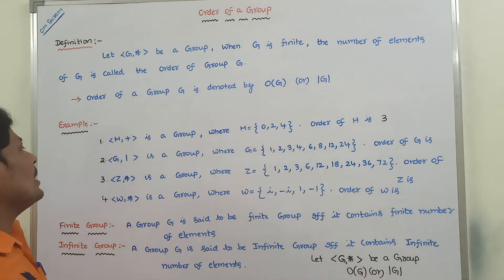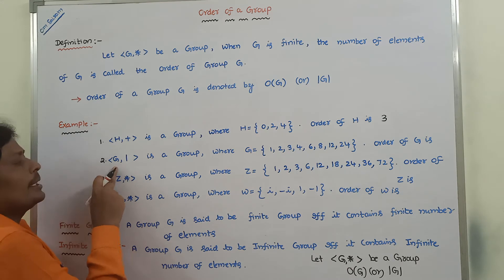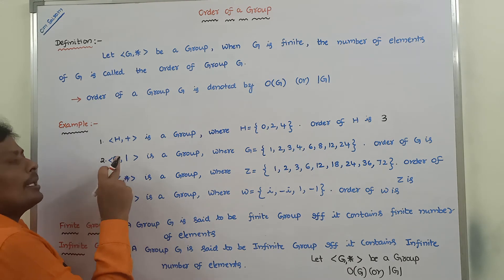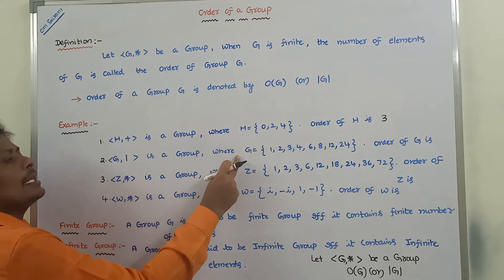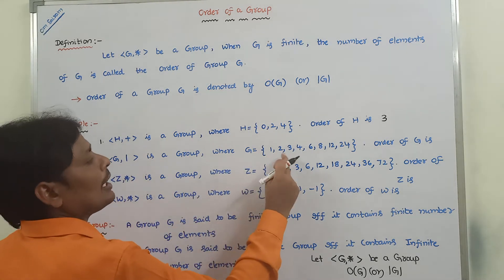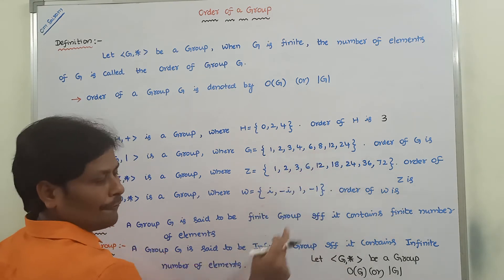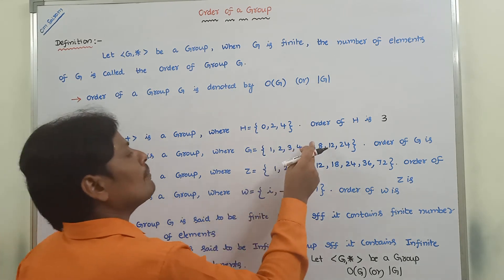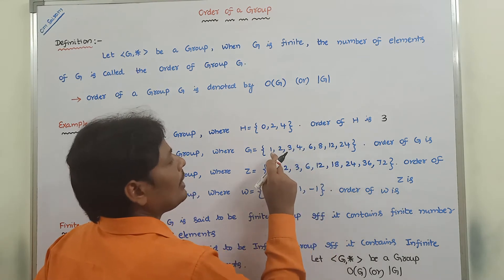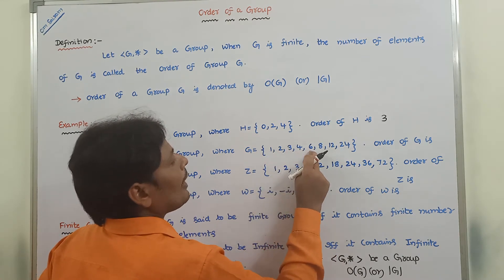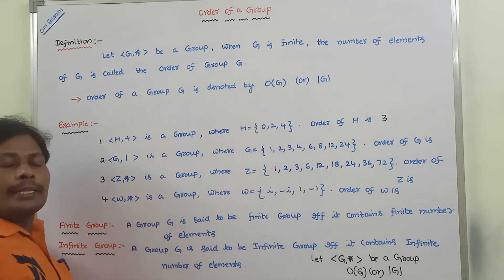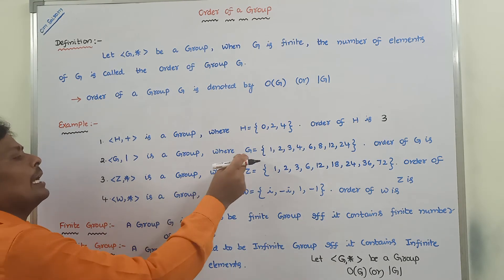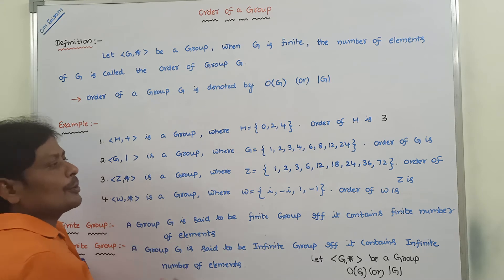Next, (G, divisibility relation) is a group where G is equal to the set {1, 2, 3, 4, 6, 8, 12, 24}. How many elements are in G? Counting them: 1, 2, 3, 4, 5, 6, 7, 8 — there are 8 elements. So the order of G is 8.